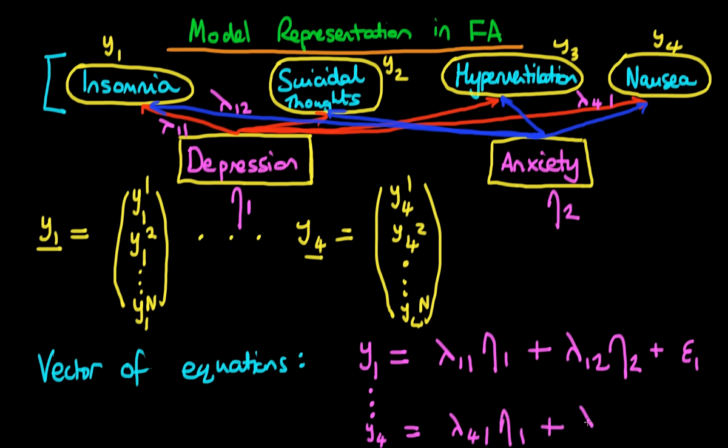And then we have to add on our lambda42, which corresponds to this last blue arrow here. So lambda42 is the weighting of anxiety on nausea. So hence, we have to multiply it by eta2. And then finally, we add our unique variance for the observed characteristic, nausea.